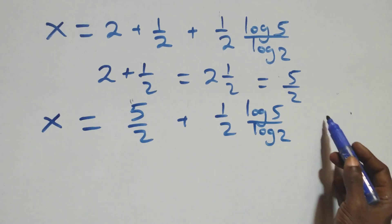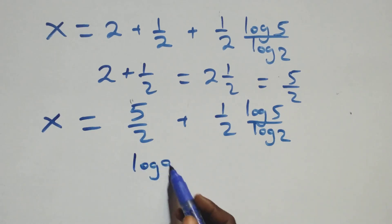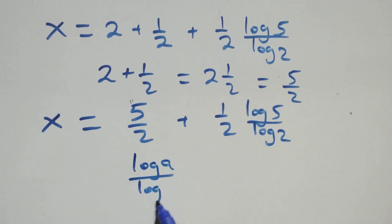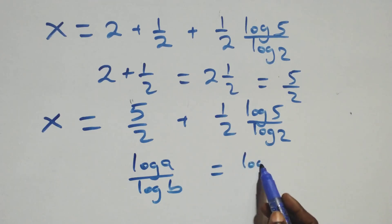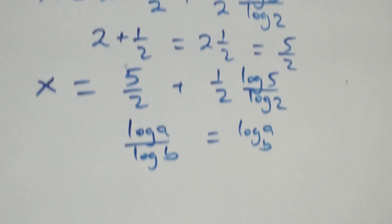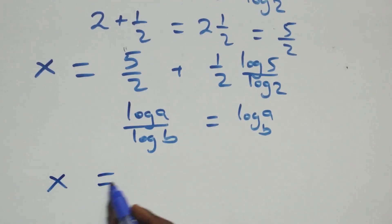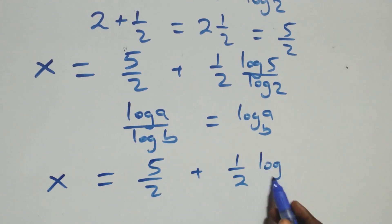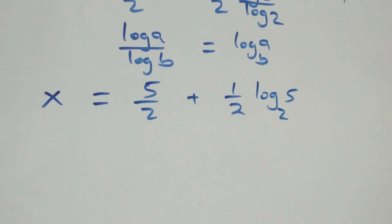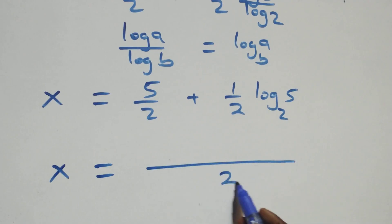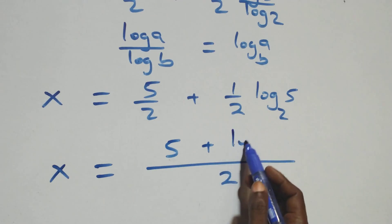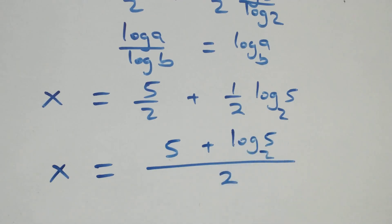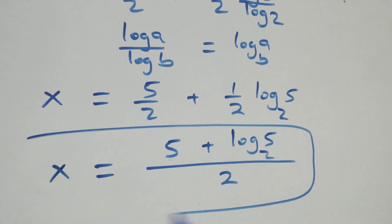We apply change of base: log 5 over log 2 equals log base 2 of 5. So x equals 5/2 plus (1/2) log₂5. Bringing together as one fraction, x equals (5 + log₂5) over 2. That is the value of x.